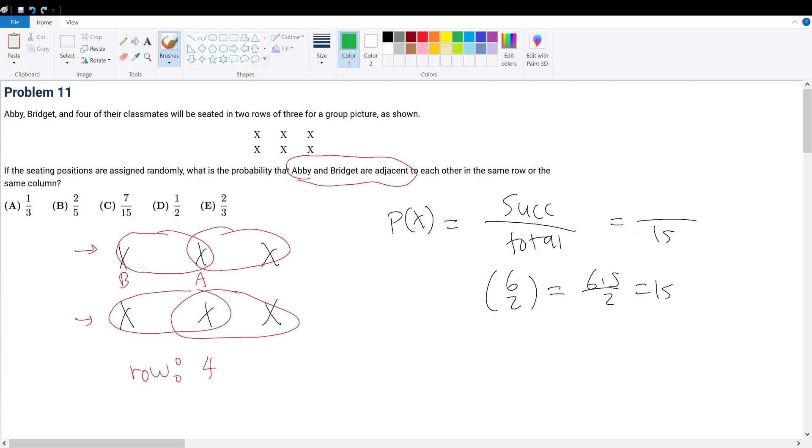Now let's move on to columns. For columns, we have three: one, two, and three. So for columns, we have three possible combinations.